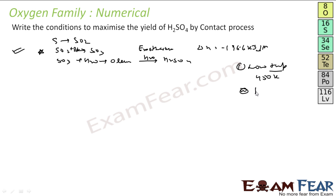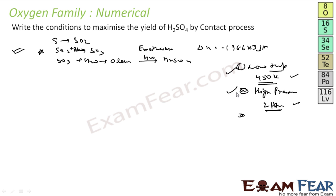The moles go from 2 moles to 1 mole, so we try to increase pressure. But at too high a pressure, sulfur dioxide will corrode the whole machine, so we take a pressure of only 2 atmospheres. With 450 K and 2 atmospheric pressure, we compromise on both temperature and pressure because of certain constraints. So we use catalyst V₂O₅ to increase the rate of reaction.